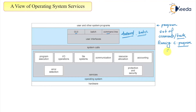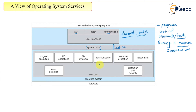That is common in the case of a C command line program. So these are the different user interfaces possible: GUI (graphical), batch, or command line. Then we are coming to a new term called system calls. After that we will see system calls in detail, but essentially there is some sort of call made to a function.